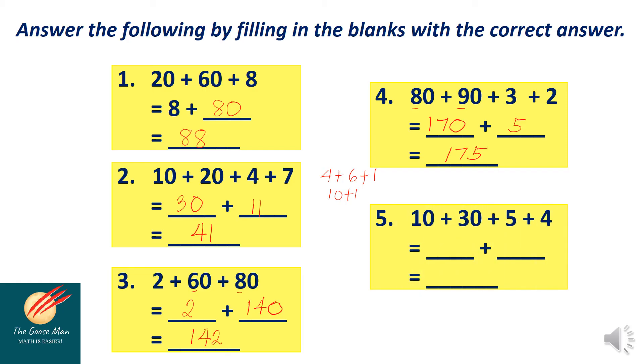Next item. 10 plus 30 plus 5 plus 9. 10 plus 30 is equal to 40, while 5 plus 9 equals 14. 40 plus 14 is 54.